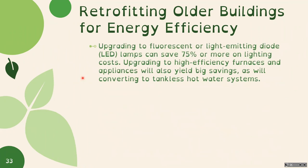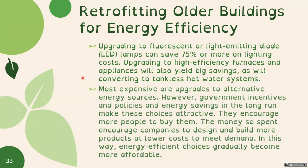Upgrading to fluorescent or LED lamps can save 75% or more on lighting costs. Upgrading to high-efficiency furnaces and appliances will also yield big savings, as will converting to tankless hot water systems. The most expensive upgrades are to alternative energy sources, but there are government incentives and long-run energy savings that make these choices attractive. The incentives encourage more people to buy them, encouraging companies to design and build more products at lower cost to meet demand. In this way, energy efficient choices gradually become more affordable and accessible to a wider population.